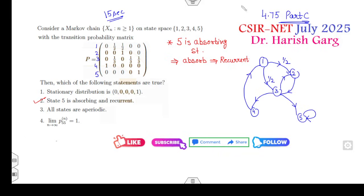So the second option, state 5 is absorbing and recurrent, is the correct mode. Further you can see if you start from the 1, you can go to the 2, you can go to the 3, then 3 to 4 and 4 to 1. That means the 1, 2, 3, and 4 these are my states that commute to each other.